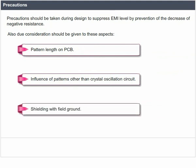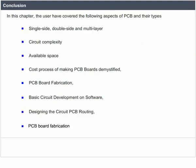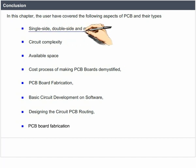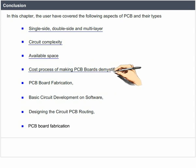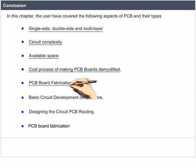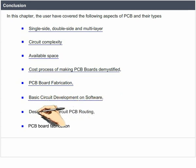Conclusion: In this chapter, the users have covered the following aspects of PCB and their types — single side, double side and multilayer; circuit complexity; available space; cost of process of making PCB boards demystified; PCB board fabrication; basic circuit development on software; designing the circuit; PCB routing; and PCB board fabrication.